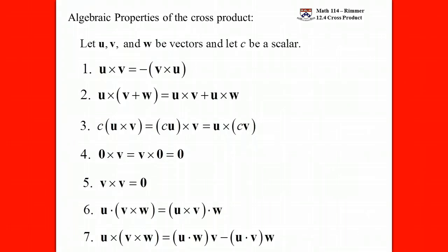We technically should be proving these things — I'm just throwing them out there. You can prove them; I could have you prove them on an exam or a quiz. Just work out the mechanics of how the dot and cross work using generic vectors: u being (u1, u2, u3), v being (v1, v2, v3), and w being (w1, w2, w3). You'll see that it does work out.